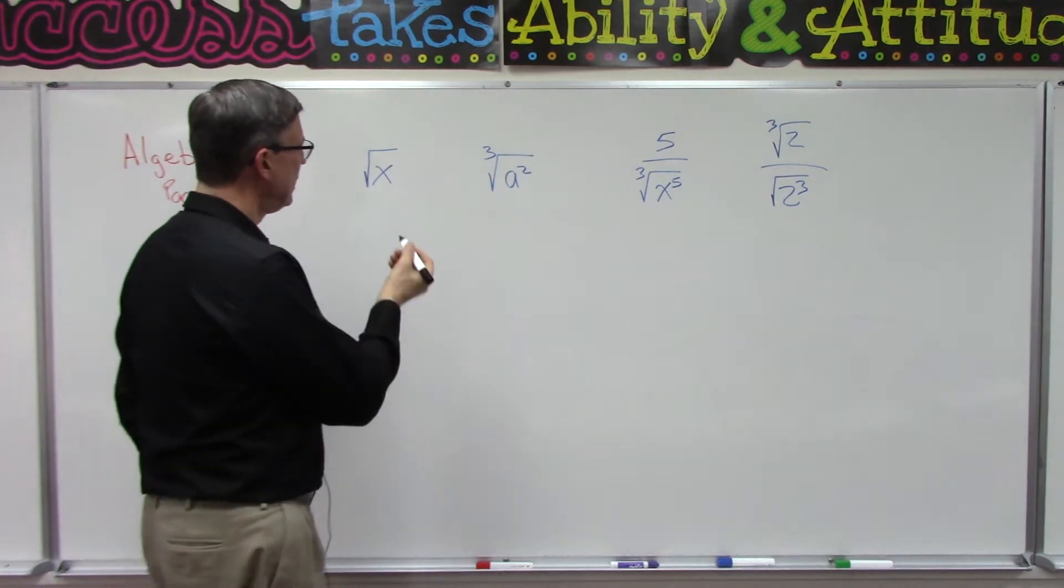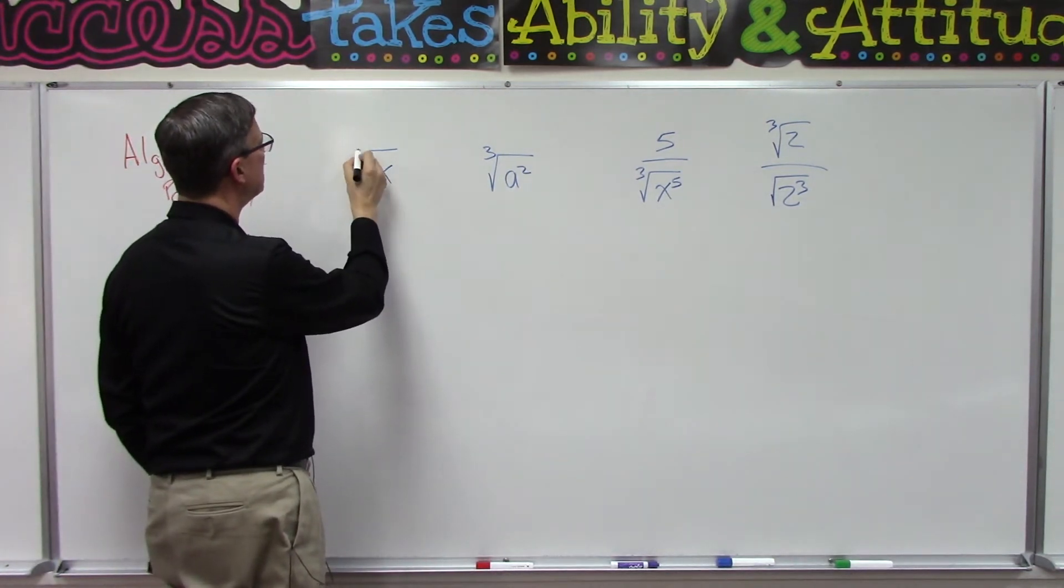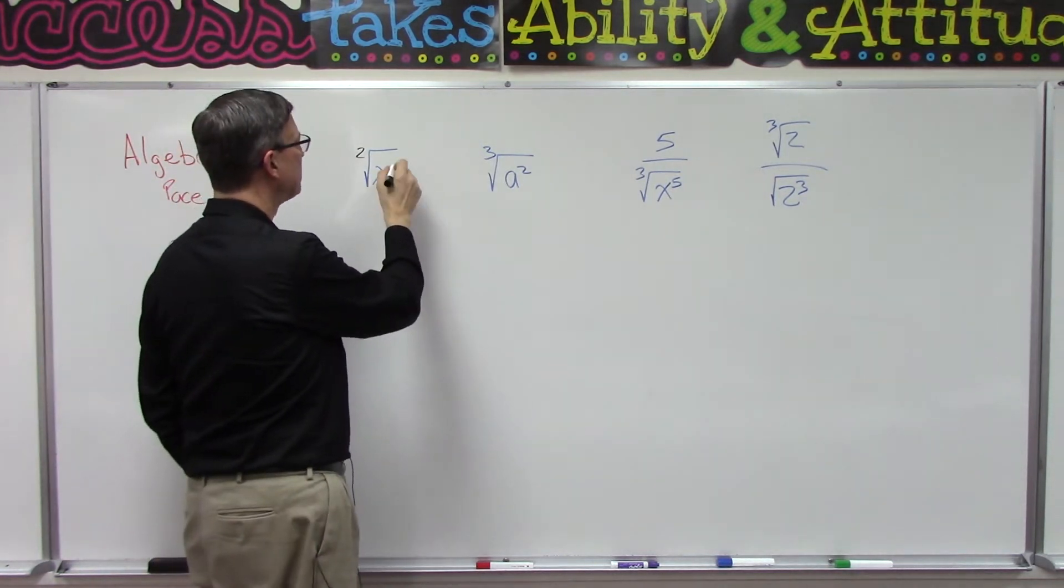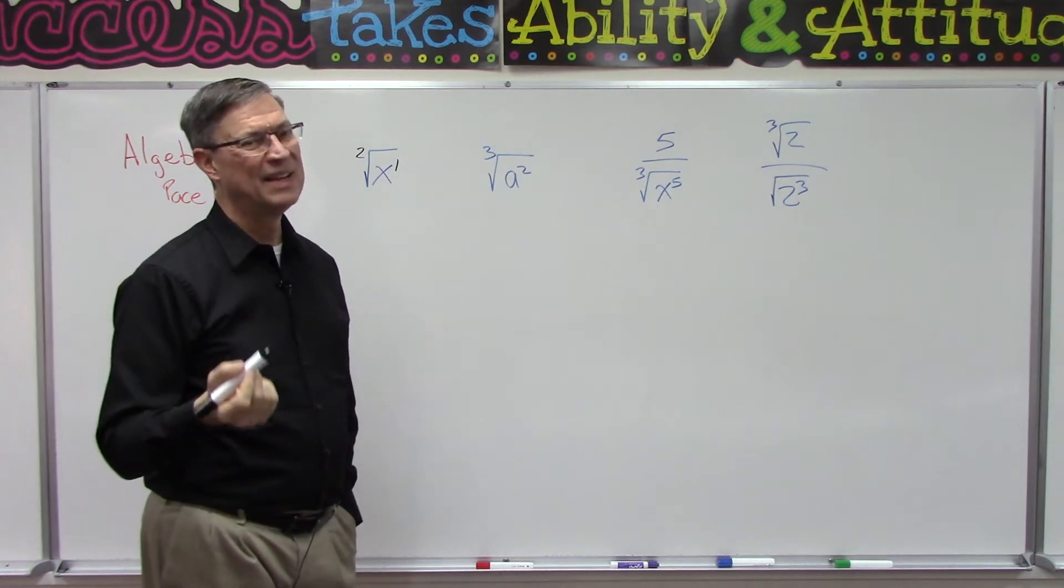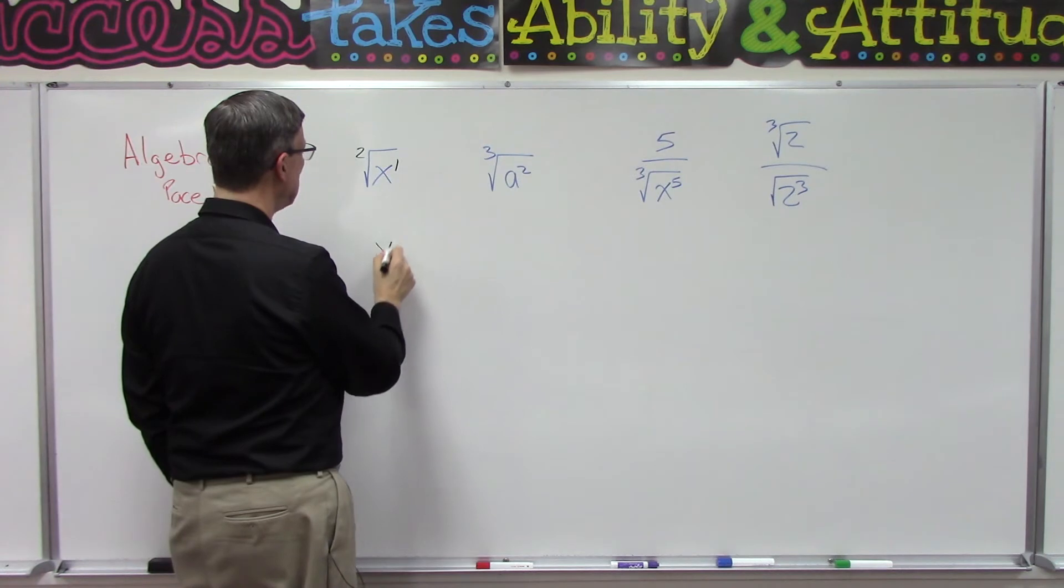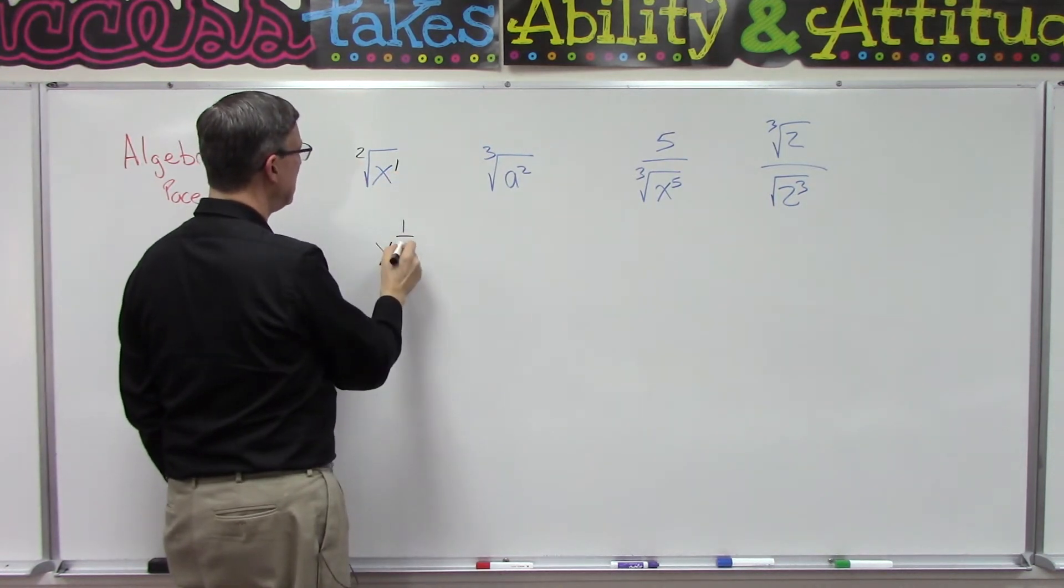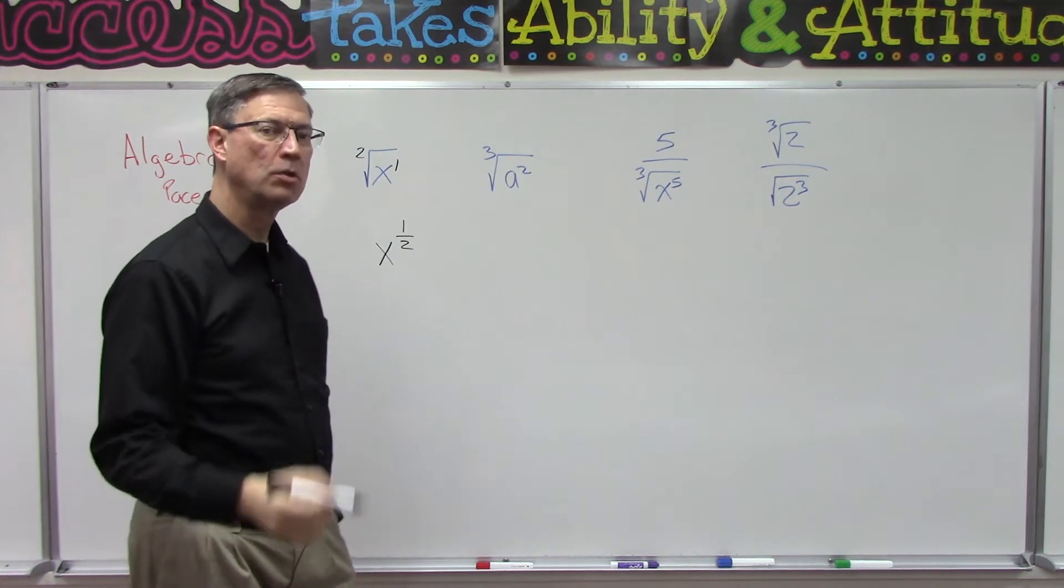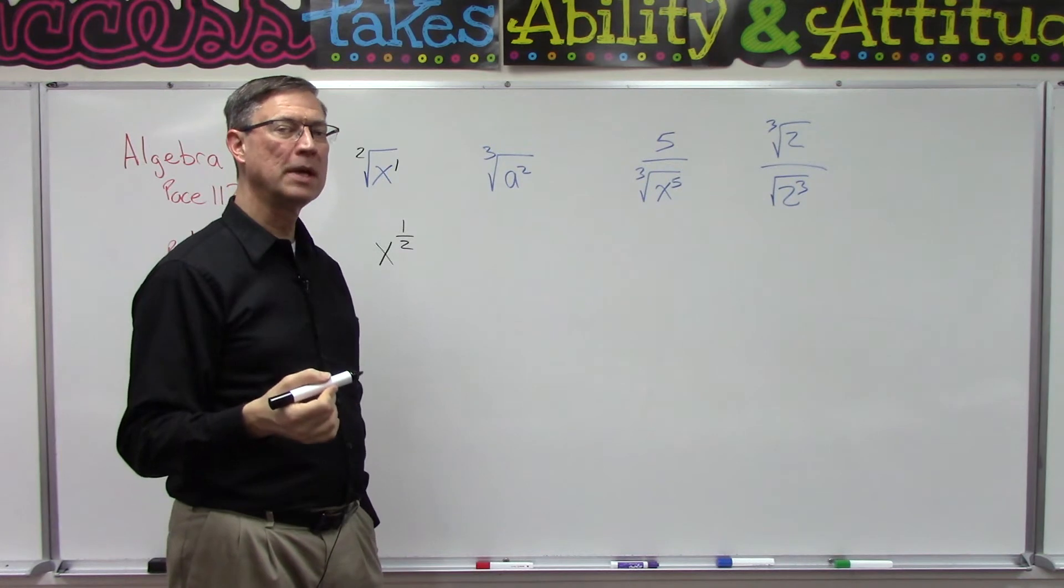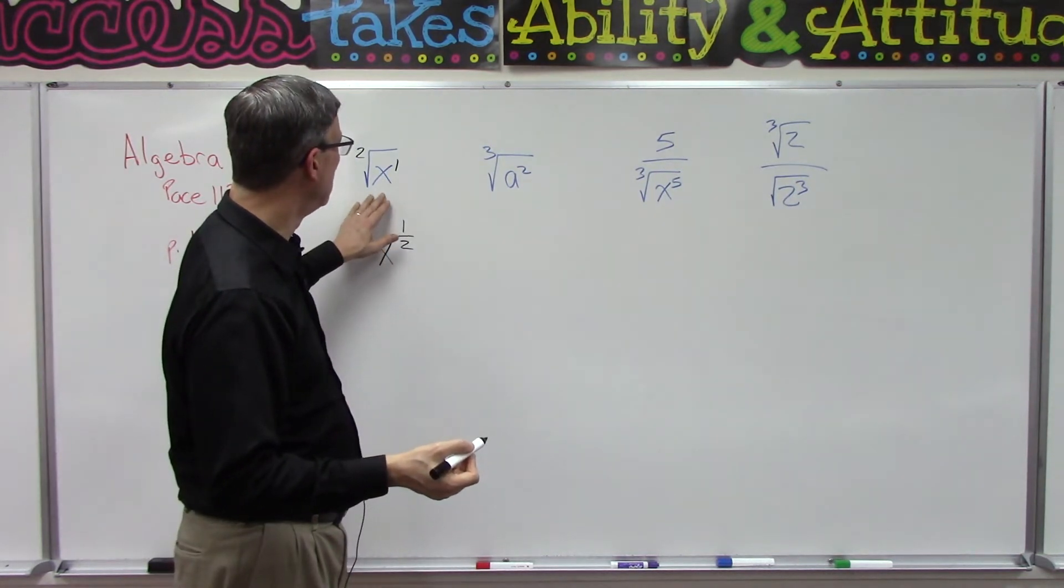Let's take this first one here. What is this index? If we don't see the index we assume it is 2, and with any variable if we don't see an exponent we can assume it is 1. This is not hard, it's just different. We can write this as x to the - we take this exponent and put it on top, put the index on the bottom - so it's x to the one half power.